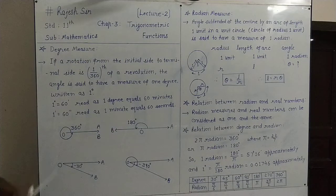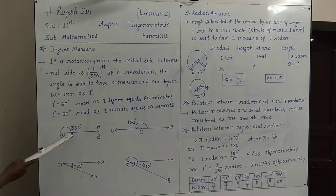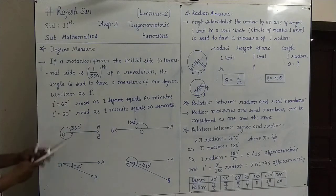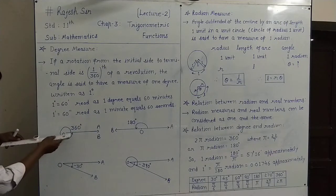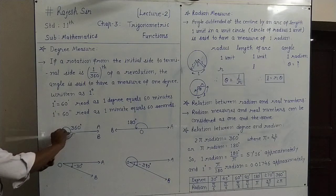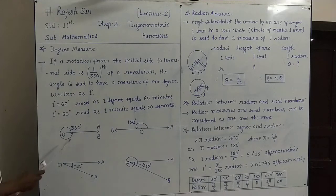Here are the angles shown in degree measures. We can see here the initial side is OA and its final side is OB on the same side, because it is rotated one complete revolution this way. So it makes a 360 degree angle.